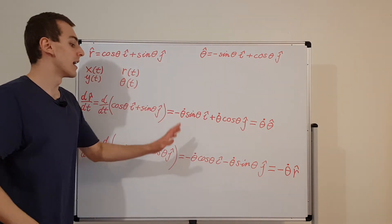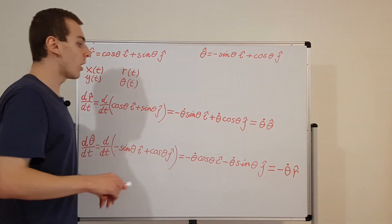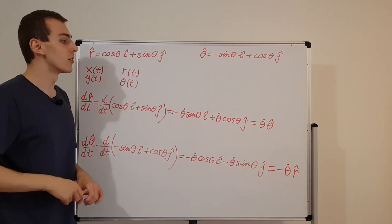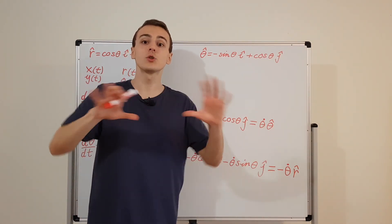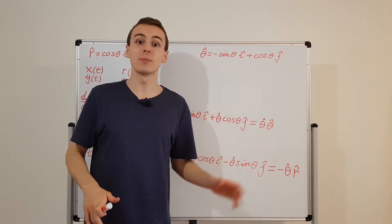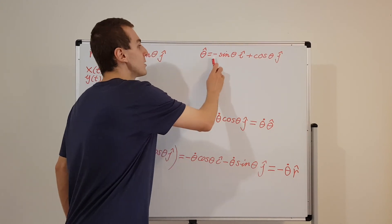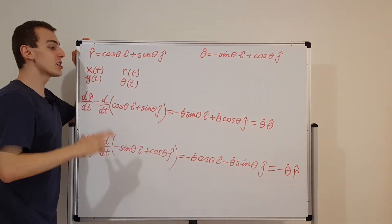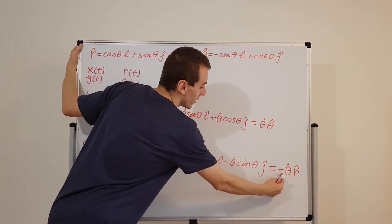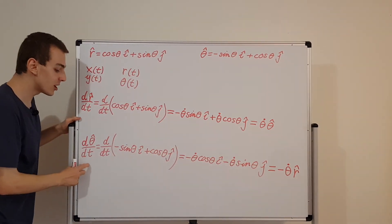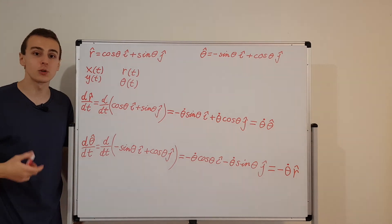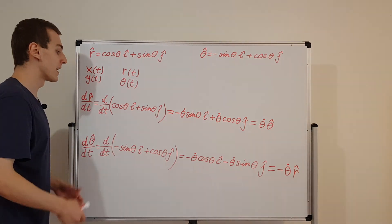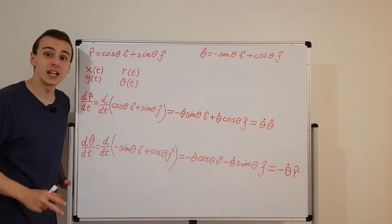This is an anti-symmetry: differentiating r hat with respect to time gives theta dot times theta hat, and differentiating theta hat with respect to time gives minus theta dot times r hat. The minus sign comes from relationships between trigonometric functions, closely linked to why differentiating is the same as rotating 90 degrees — because the vectors are perpendicular. We'll use these important relationships in the next few videos when we look at velocity and acceleration in polar coordinates.